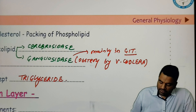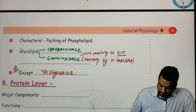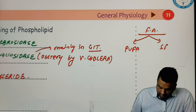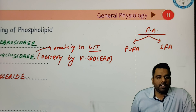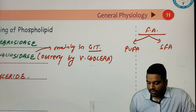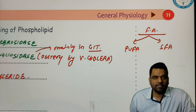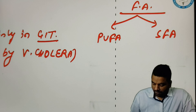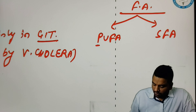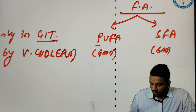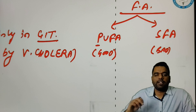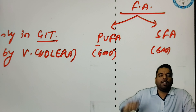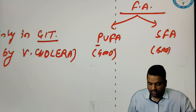Now this fatty acid can be of two types: number one is PUFA and another one is SAFA. PUFA means polyunsaturated fatty acid and SAFA means saturated fatty acid. Which one is good for the body — PUFA or SAFA? You can remember like this: P for perfect, P for PUFA — so PUFA is good for the body. SAFA are bad fats. So all the junk foods — pizza, burger, pasta — whatever you eat, basically they all contain SAFA. That's why they are bad for the health.